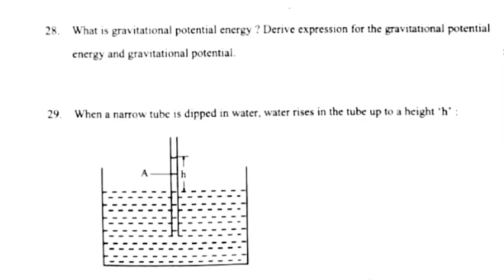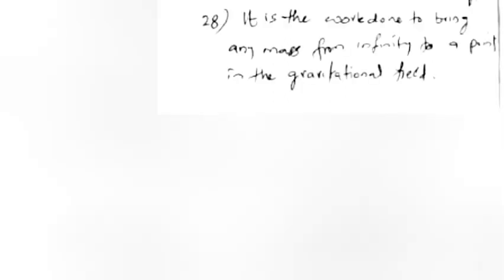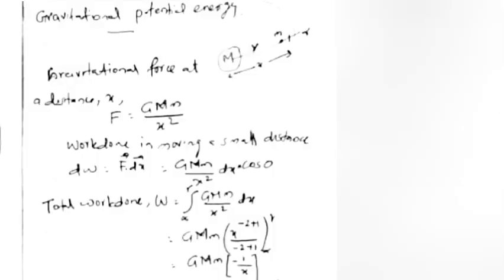What is gravitational potential energy? Derive expression for gravitational potential energy and gravitational potential. Answer: It is the work done to bring any mass from infinity to a point in the gravitational field. Gravitational force at distance x: F equals GMm by x squared.